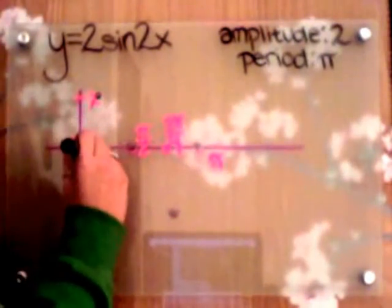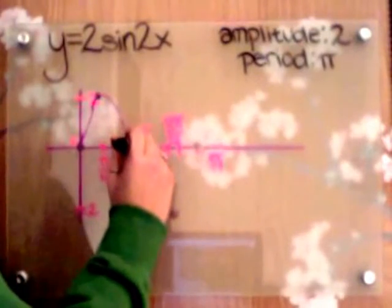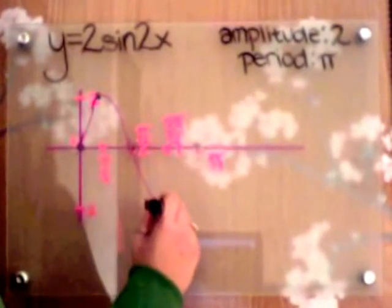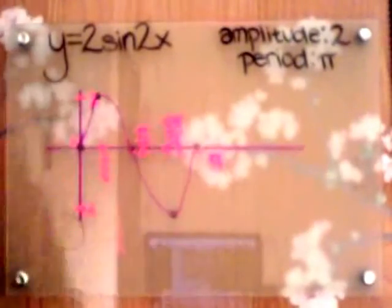We're going to start at 0, go up to 2, down to 0 at π over 2, back down to negative 2 at 3π over 4, and then back up to 0 at π.